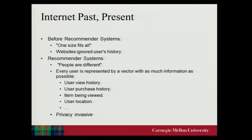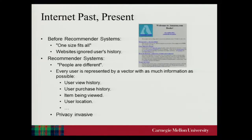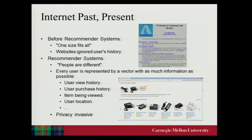Even before we had recommender systems, how did the web look? This is what Amazon used to look like — just a website where you can come and order something or get information. But it's a one-size-fits-all: everyone sees exactly the same thing regardless of your history. Once recommender systems emerged, they understood that people are different — different history, viewing habits, purchase history, location — and you would get different recommendations.